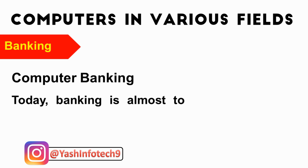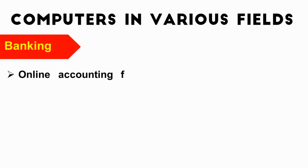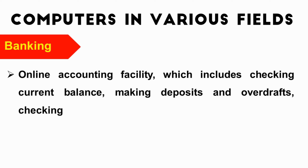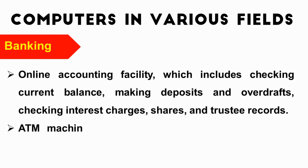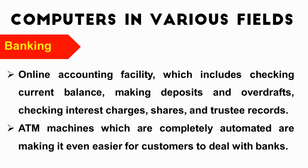Computer banking: Today, banking is almost totally dependent on computers. Banks provide online accounting facilities which include checking current balance, making deposits and overdrafts, checking interest charges, shares and trustee records. ATM machines, which are completely automated, are making it even easier for customers to deal with banks.